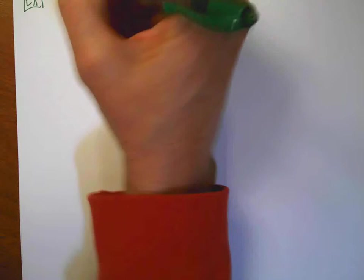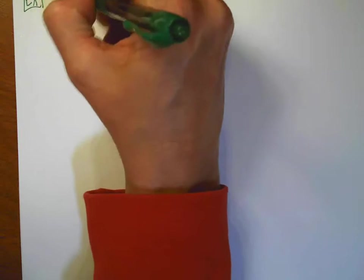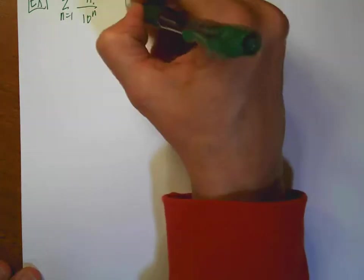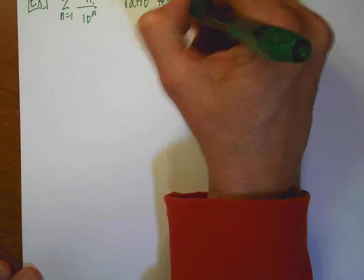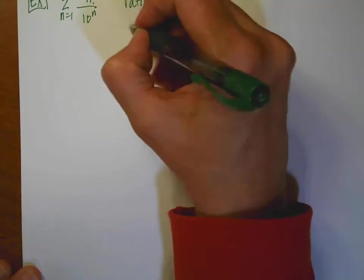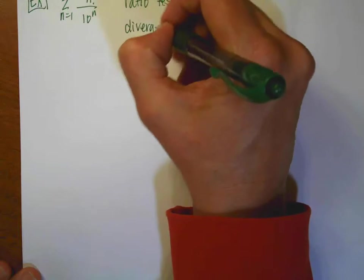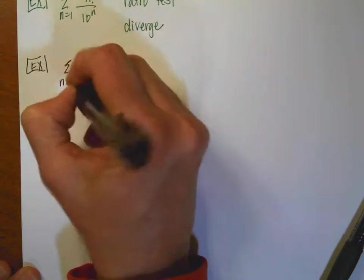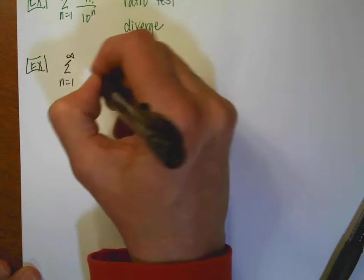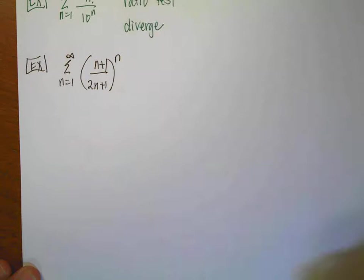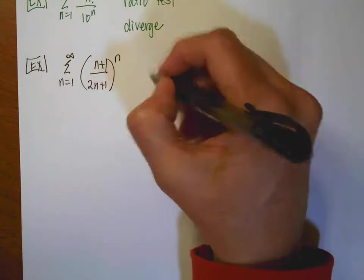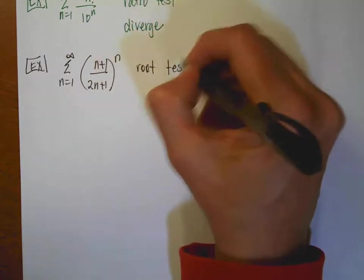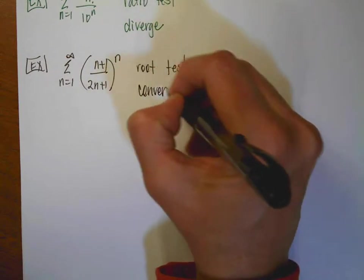Two more examples. One would be the sum from n equals 1 to infinity of n factorial over 10 to the n. Remember, if we have exponentials or factorials, that would be a clue to use the ratio test — and then if we do the ratio test, we're going to get that this particular series is going to diverge. And then my last example is the sum from n equals 1 to infinity of n plus 1 over 2n plus 1 raised to the nth. Because I have a mess of stuff raised to a power, I would use the root test, and this one is going to converge.